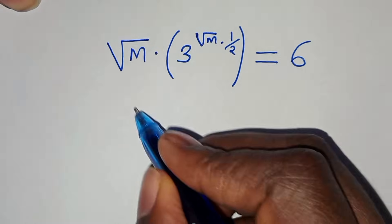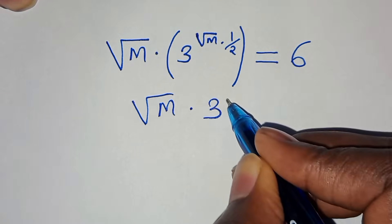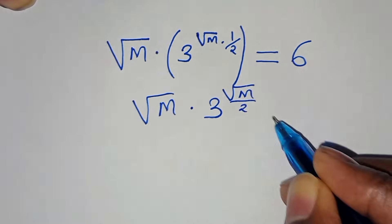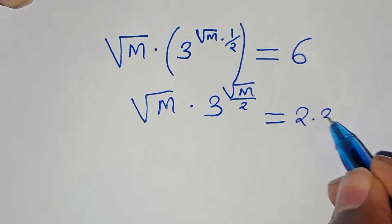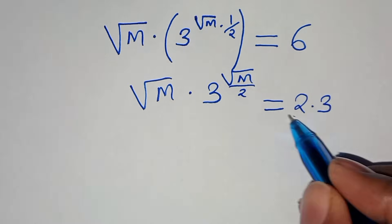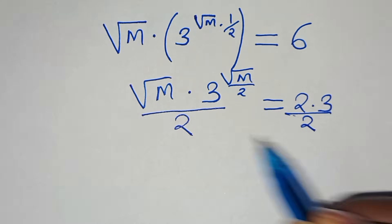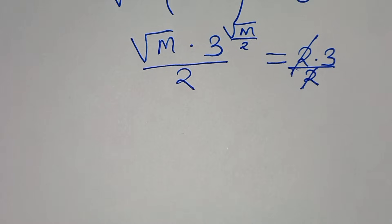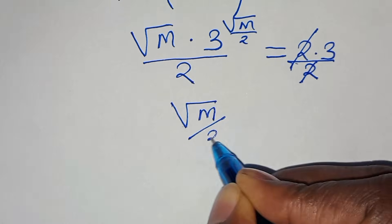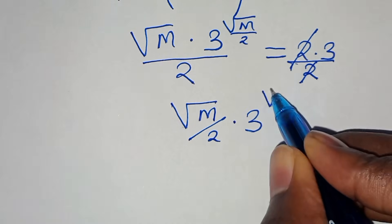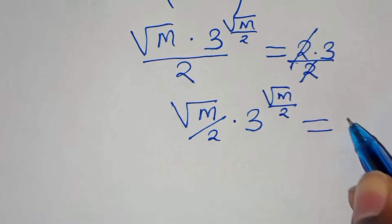We have square root of m multiplied by 3 to the power of square root of m over 2, equal to 6. We can express 6 as 2 multiplied by 3. The next step is to divide both sides by 2 — 2 and 2 simplify — so that we have square root of m over 2, multiplied by 3 to the power of square root of m over 2, equal to 3.